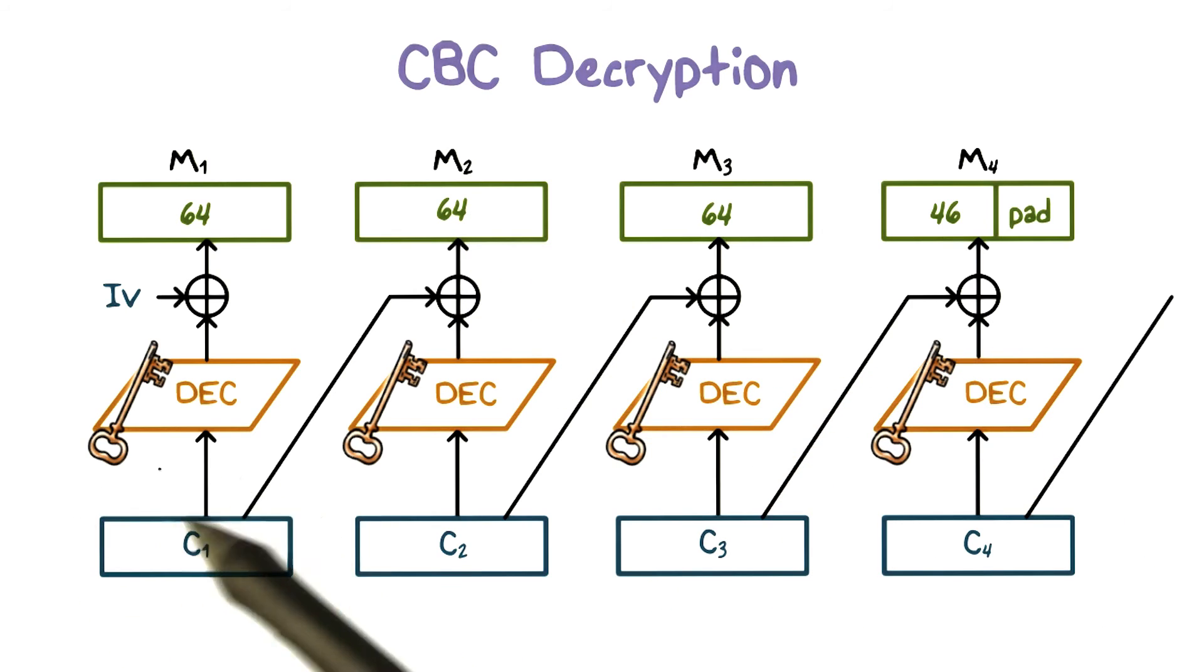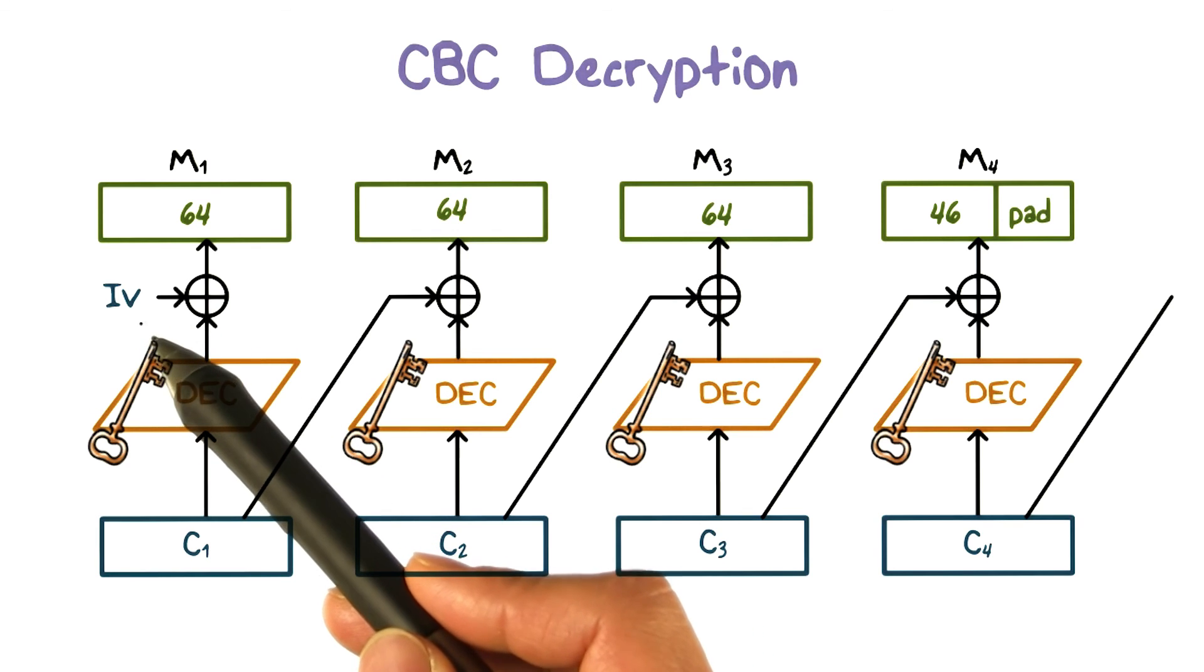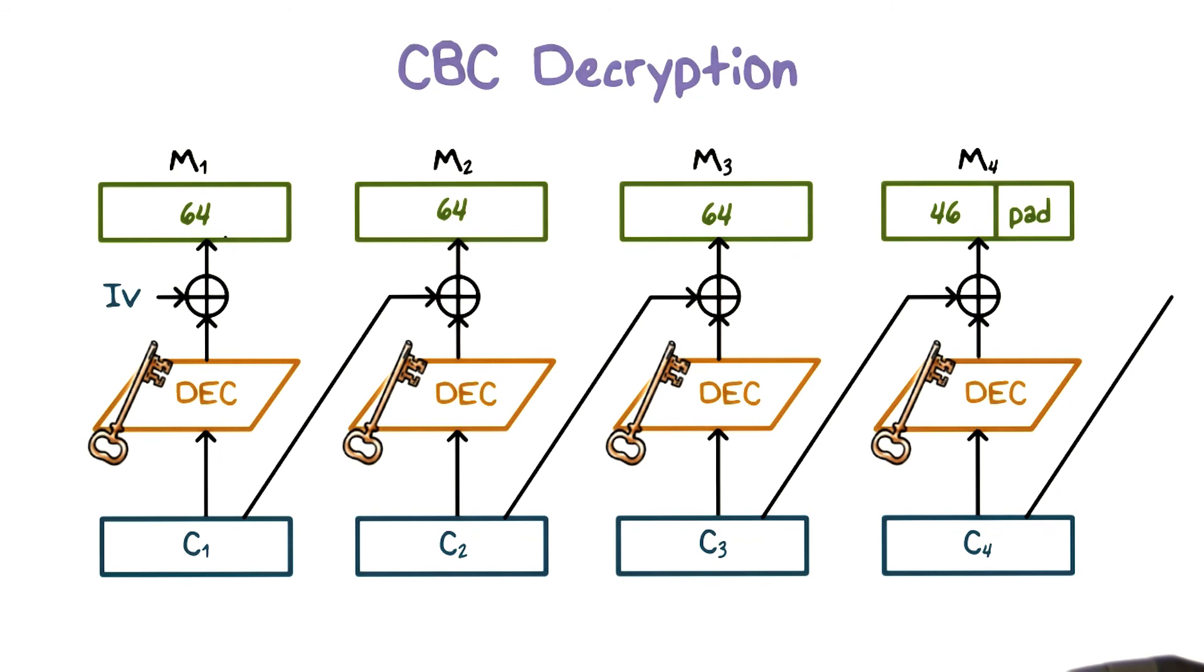For the first ciphertext block, after decryption, the result is XORed with the IV to produce the first plaintext block. Therefore, the IV must be known to both the sender and receiver.